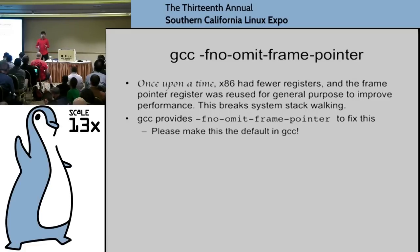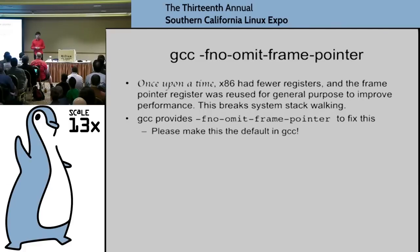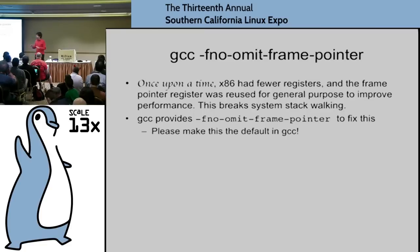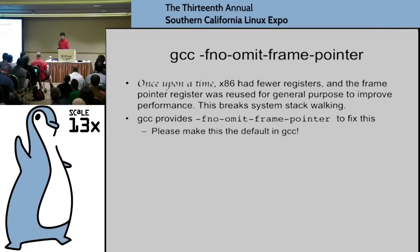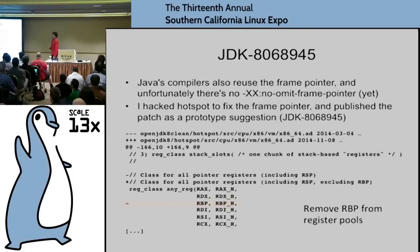To fix frame pointer stack walking for compiled code, compile with GCC -fno-omit-frame-pointer. The reason this is an issue is that a long time ago x86 had a smaller number of registers. The frame pointer register helps debuggers understand the stack trace. Since x86 had few registers, compiler optimizers — the sworn enemy of performance profilers — decided to use that register for their own optimizations. So turn that off. Things like Java and Node.js are different though.